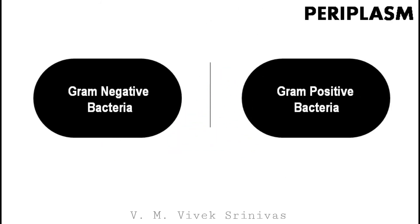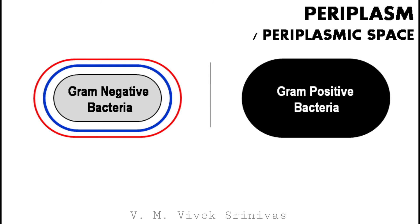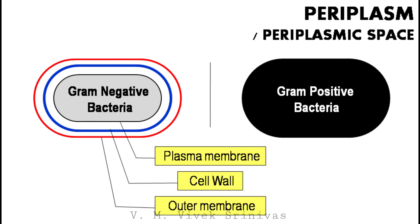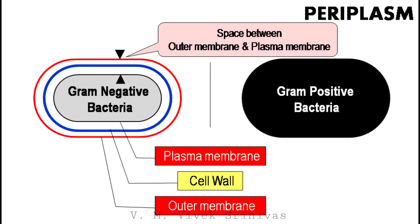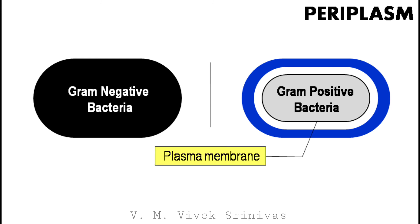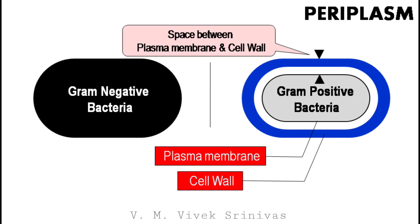The next structure is the periplasm, also referred to as the periplasmic space. In gram-negative bacteria, the cellular contents are protected by the multi-layered structure consisting of the plasma membrane, the cell wall, and the outer membrane. Here, in gram-negative bacteria, the periplasm is the space between the outer membrane and the plasma membrane. Whereas in gram-positive bacteria, the cellular contents are protected by the plasma membrane and the cell wall. Here, in gram-positive bacteria, the periplasm is the space between the plasma membrane and the cell wall.